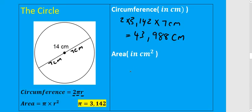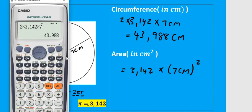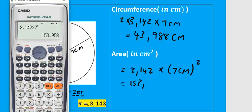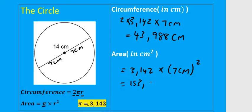Now for the area, also in centimeters. The formula is A = π × r². The value of π is 3.142, multiplied by the radius squared. Our radius is 7, so we square it: 3.142 × 7² on the calculator gives us 153.958 centimeters squared. Remember, area is always squared.